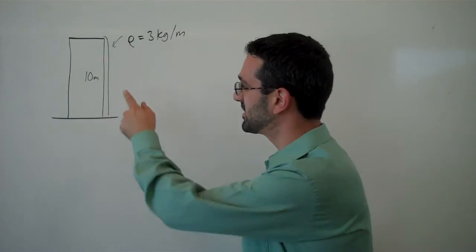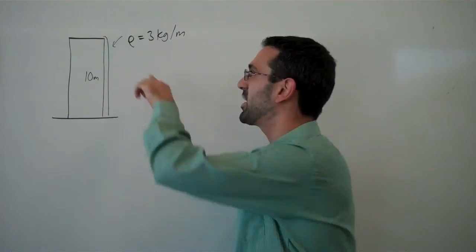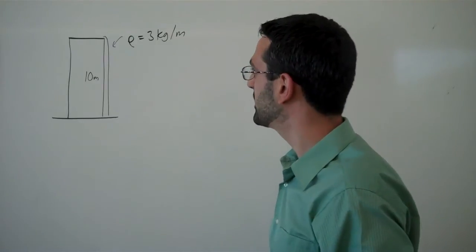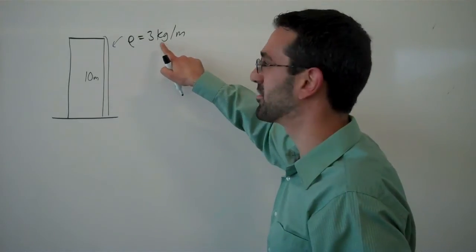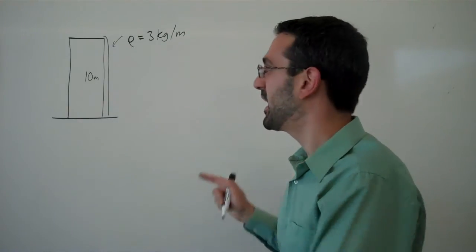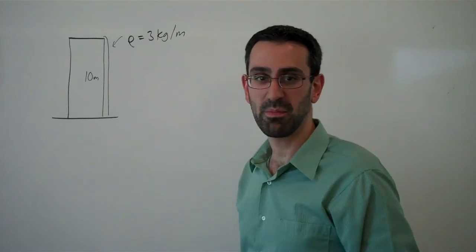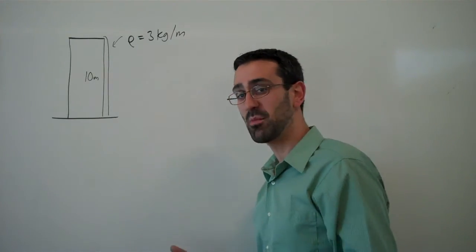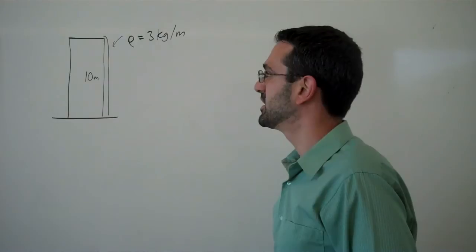So in this problem, we have a 10 meter tall building and we have a chain hanging off the building that has density of 3 kilograms per meter. And we want to lift this chain to the top of the building and we want to calculate how much work is required to do that.